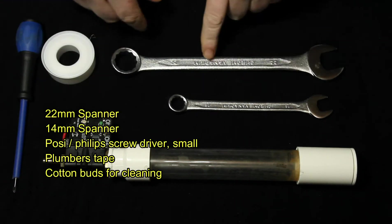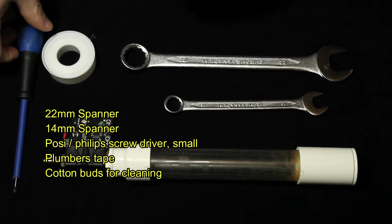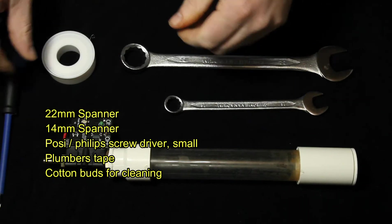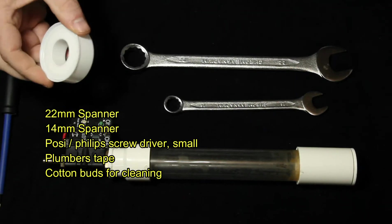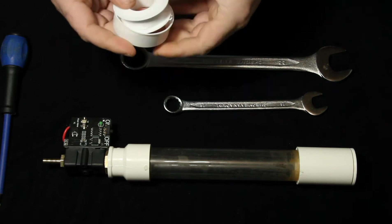The things you're going to need is a 22mm spanner, 14mm spanner, a small Phillips or posi drive screwdriver and some plumbers sealant tape. So when you put it back together it doesn't leak.